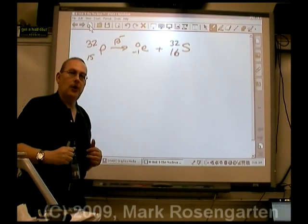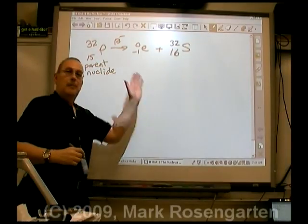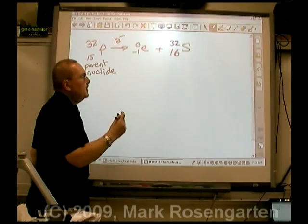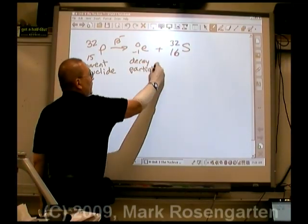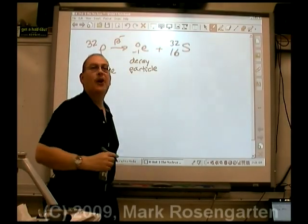The nucleus you start with, the unstable nucleus, is called the parent nuclei. The beta particle is referred to as a decay particle. And the more stable nucleus that you form is called the daughter nuclei.